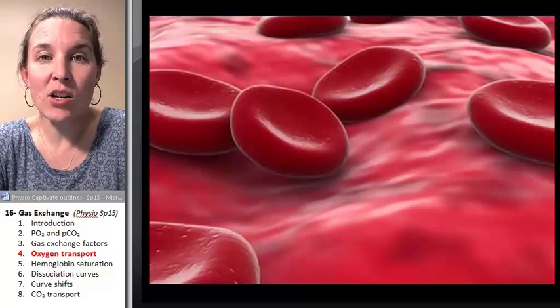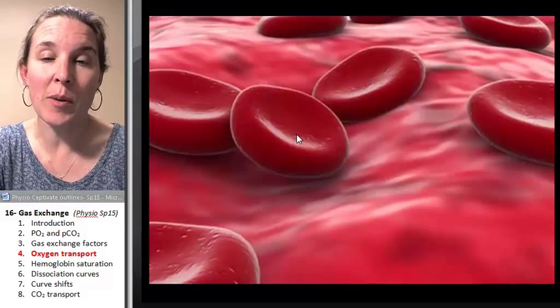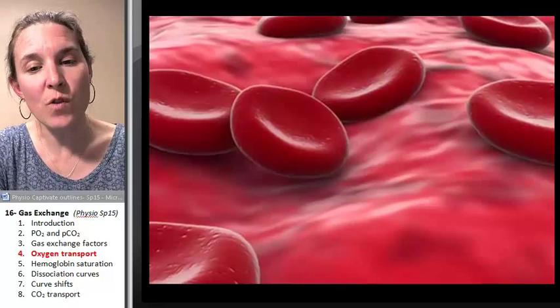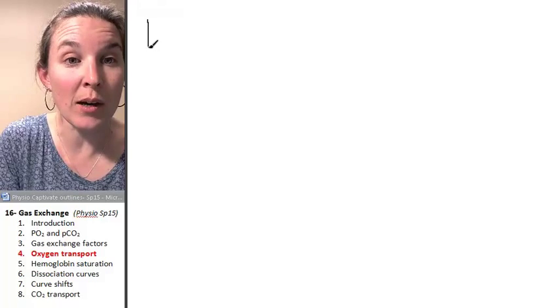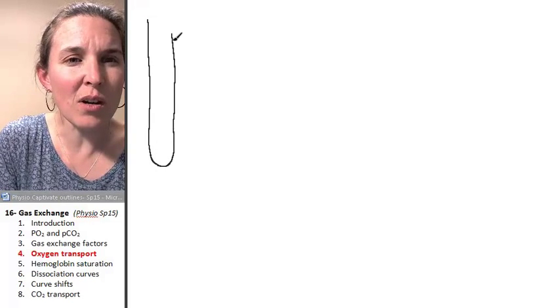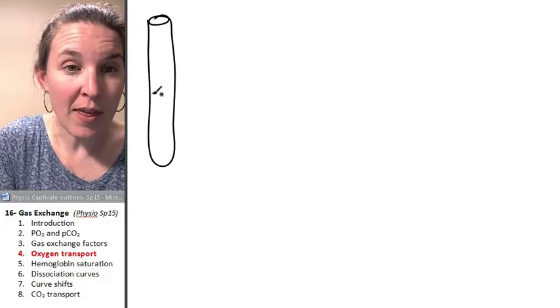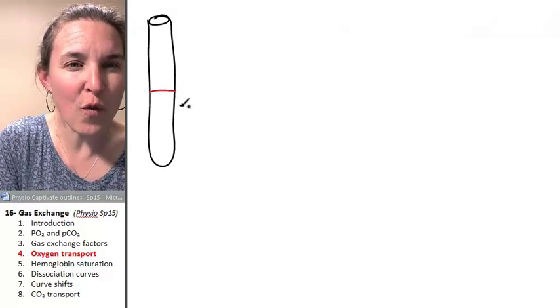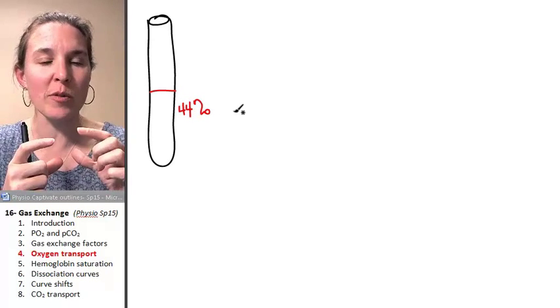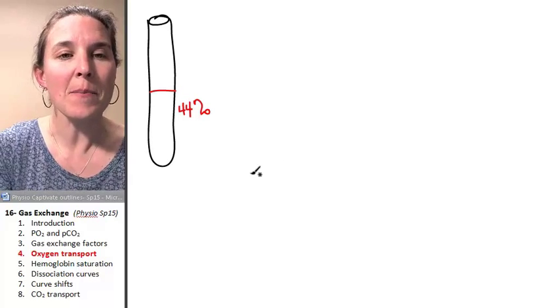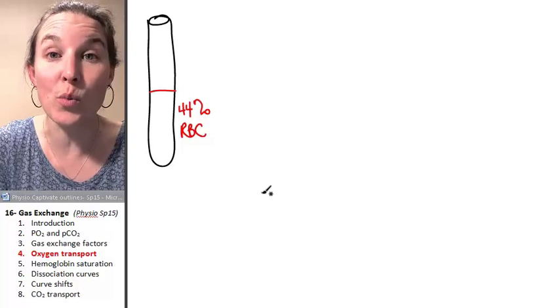And when we deal with oxygen transport, here's our main player, it's the red blood cell. So let's review what blood even is in the first place. And I'm going to just give you a little test tube of blood and tell you that about 44% of blood, if you were to take a test tube of blood and then centrifuge it, about 44% of it is going to be made up of red blood cells or erythrocytes.